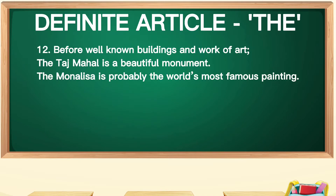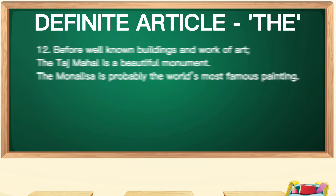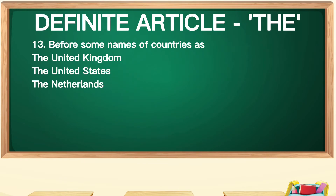The twelfth point: before well-known buildings and works of art, we use 'the'. Like the well-known building Taj Mahal — 'The Taj Mahal is a beautiful monument.' Work of art: 'The Mona Lisa is probably the world's most famous painting.' The is also used before the names of plural countries, because there are many parts together in them — like The United Kingdom, The United States, The Netherlands, and The Philippines.